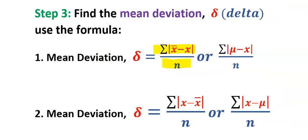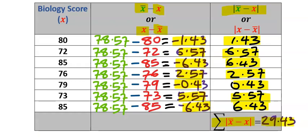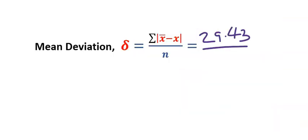Hence, our mean deviation becomes 29.43 by the size of the class. Our mean deviation becomes 4.20.